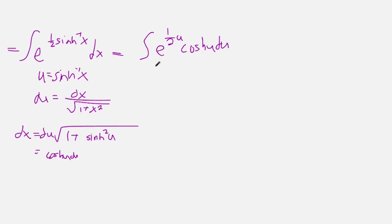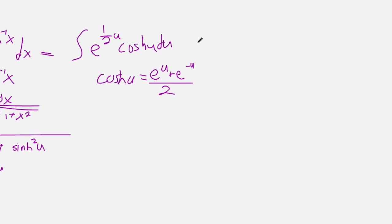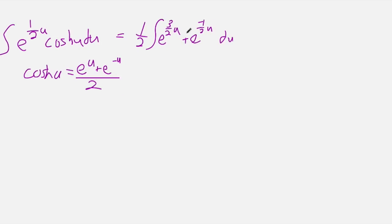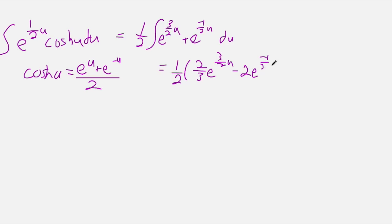Now integration by parts might be tempting, but instead we can just expand the hyperbolic cosine of u. Because this is e to the u plus e to the minus u, all over 2 — that is the definition of the hyperbolic cosine. So I'm going to bring the one half outside of the integral. We have one half times the integral of e to the 3/2 u plus e to the negative one half u. Now this is just integrating the exponential function, which is really easy to do.